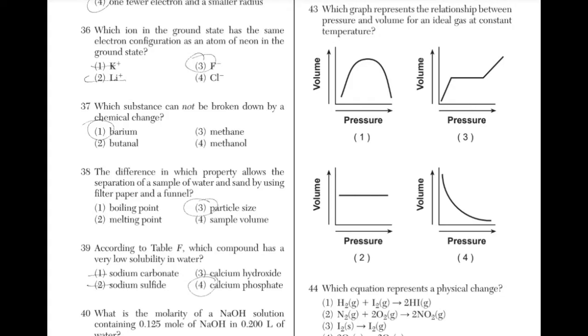Which graph represents the relationship between pressure and volume for an ideal gas at constant temperature? The answer is choice 4. You just have to remember that for an ideal gas, there is greater pressure and less volume.